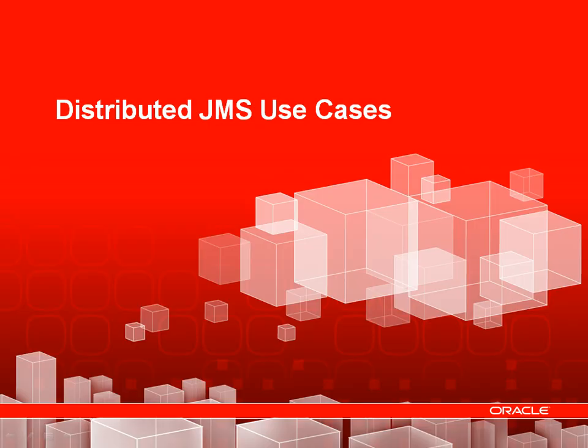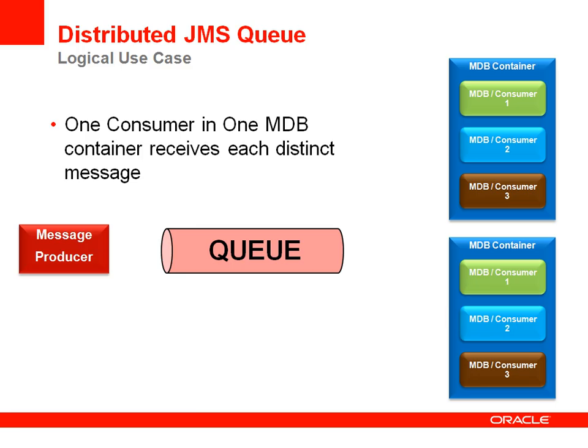Next, let's take a look at distributed JMS use cases. For distributed JMS, you have multiple JMS containers that can receive messages. When you use distributed queues, each message is delivered to only one consumer in a single MDB container, maintaining the point-to-point use case. Using distributed queues, you can balance the load of processing JMS messages across a cluster for more scalability, and you can increase your throughput by adding additional managed servers to the cluster.